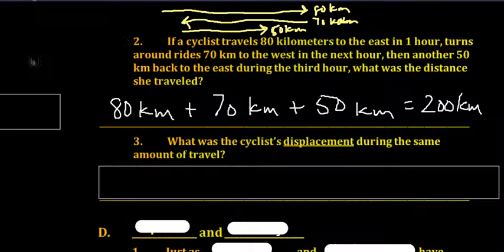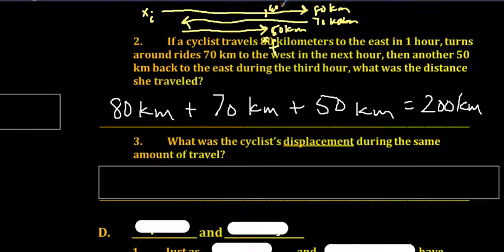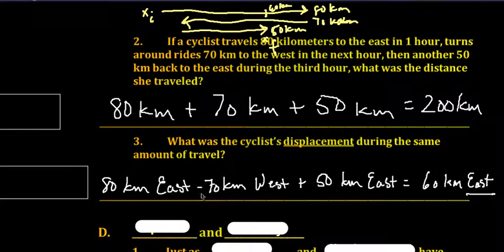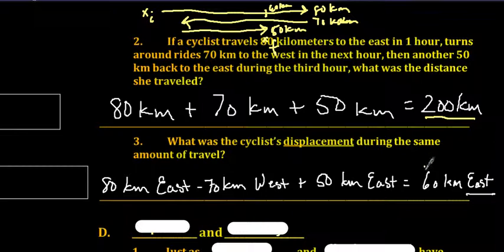But what was the displacement? If we examine the initial position and the final position and subtract those, she ends up at 60 kilometers to the east — that's 80 east minus 70 west plus 50 east, totaling 60 kilometers east of where she started. So distance is the total amount covered, which is 200 km, while displacement is how far and in what direction she traveled from start to finish, which is 60 km east.